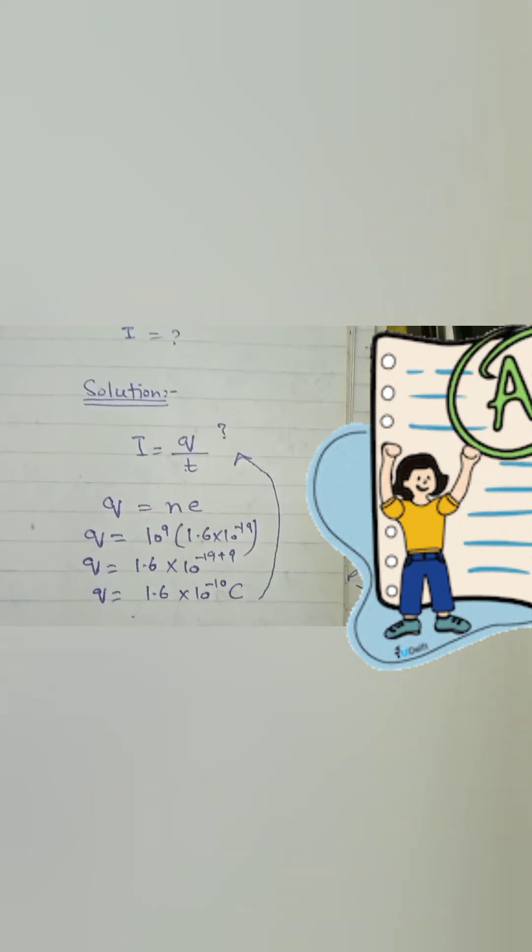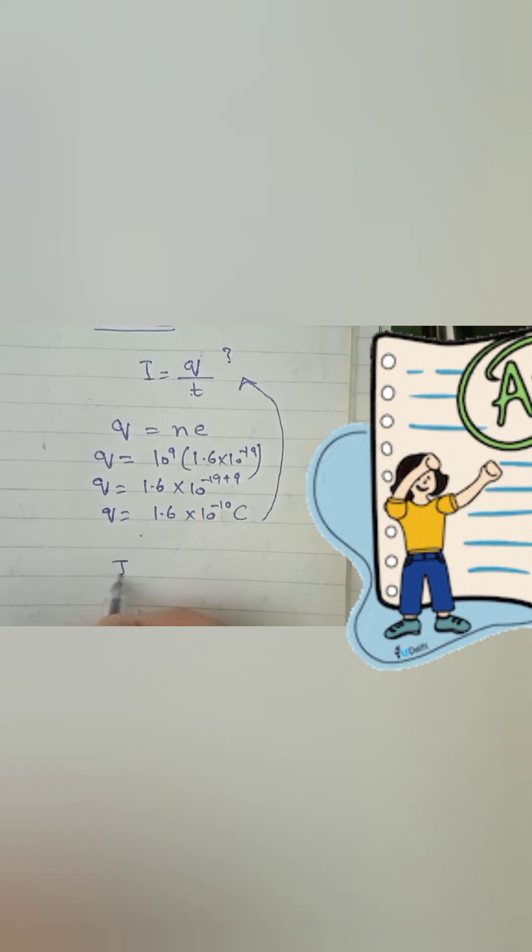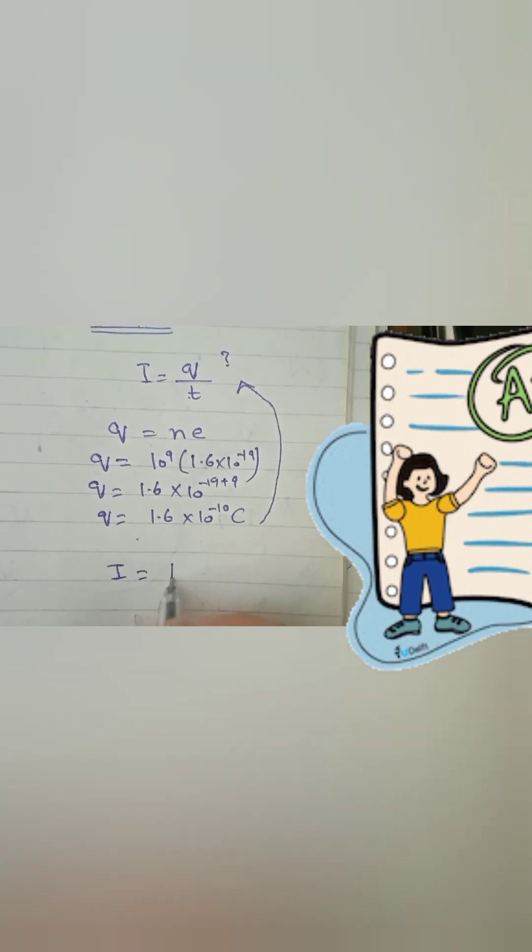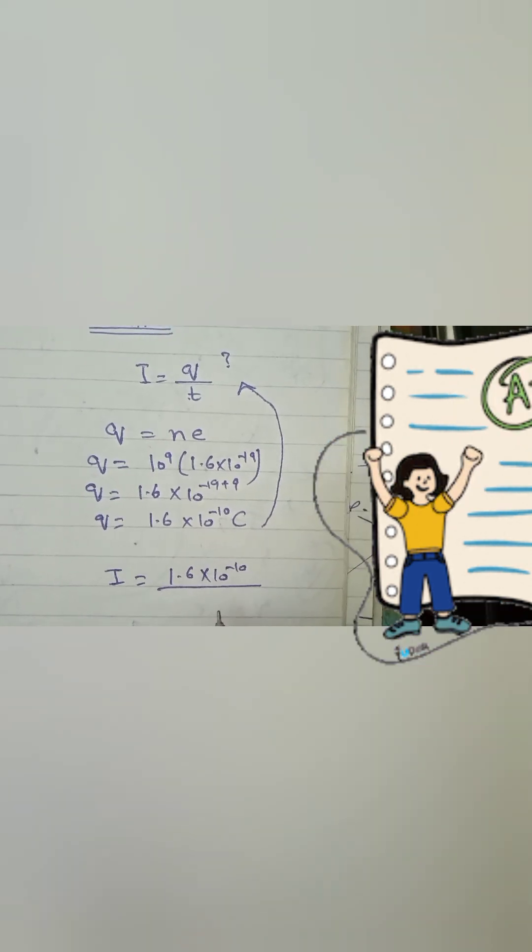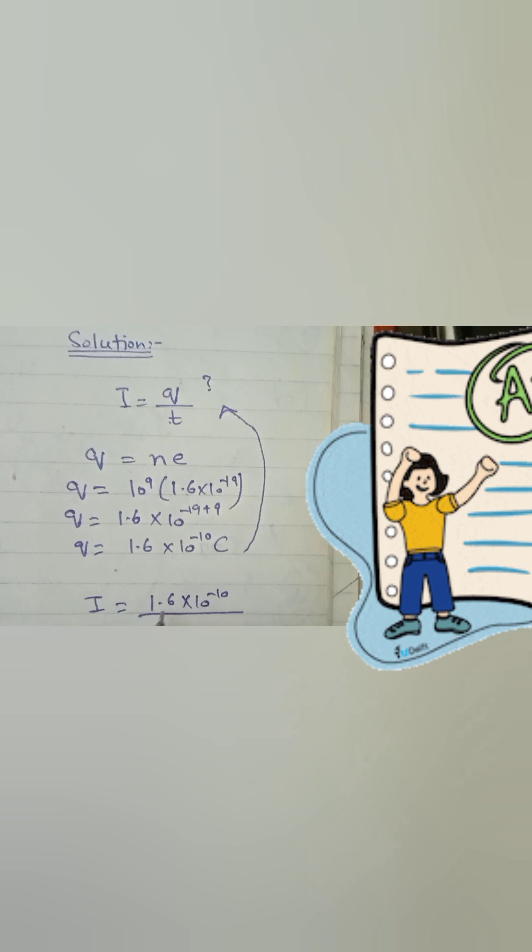Now put this back in our actual equation, I equals q over t, because we have to find current. Put in the values and calculate.